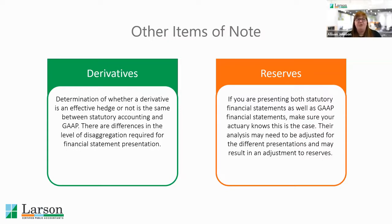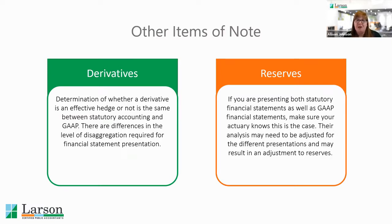The other area is in reserves. Often an actuary is the one determining the reserve amount. Be aware that if you are planning on presenting both statutory financial statements as well as a GAAP basis, make sure your actuary knows, as there are some adjustments to the assumptions they need to make, as well as some adjustments to their calculations based on some of the GAAP items. They'll likely want to issue a separate opinion over the GAAP.